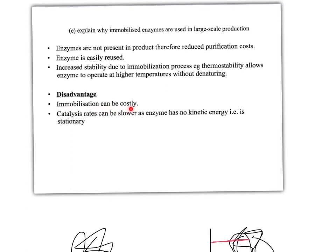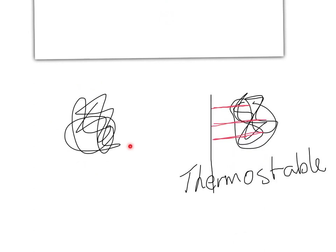Here are a couple of disadvantages. The whole immobilization process can be quite costly. Also, catalysis can actually be slower than enzymes which are free in solution. A soluble enzyme can move around in water and collide with substrate molecules, giving a high collision rate. But an immobilized enzyme is stuck to an insoluble substance and is stationary — it has no kinetic energy and can't move around. Therefore, it's less likely to collide with substrate molecules, the collision rate is slower, and less product is formed. That finishes our look at immobilized enzymes.